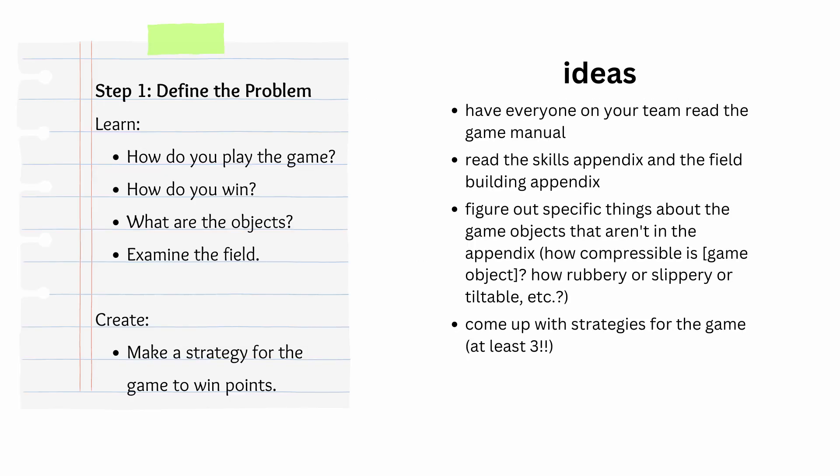Step one is about defining the problem. How do you play the game? How do you win? You're basically going to be reading through the game manual and appendices, figuring things out about the game in order to help you create a strategy. Some important things to find out here are the scoring rules and the actual gameplay and specific game rules, which will help you identify the ways to go when you're trying to make a strategy. Also, figure things out about the game that you wouldn't have been able to figure out just by reading the manual — go in there and conduct some real tests. After that, come up with some strategies; you want to make at least three of them to satisfy the rubric requirements.